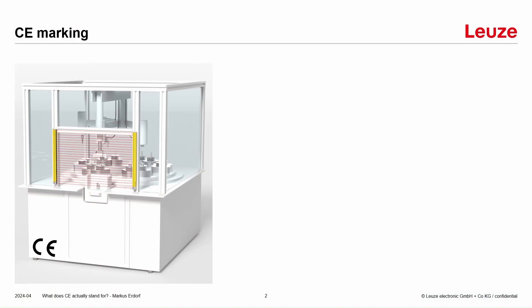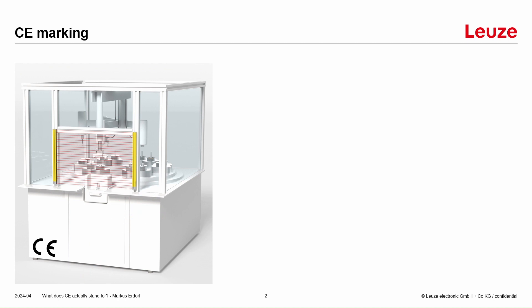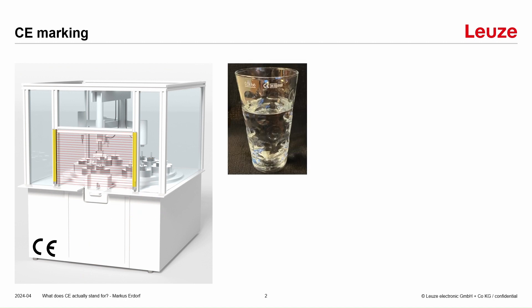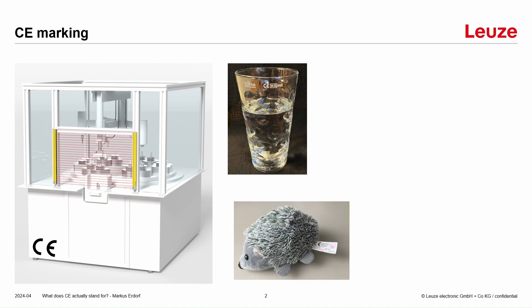If you're talking about CE marking, we usually think about safe machinery, but it's not only machinery. There are some more things where we find a CE marking — for example, on a glass of water, on toys, or also on an ID card for the hotel.